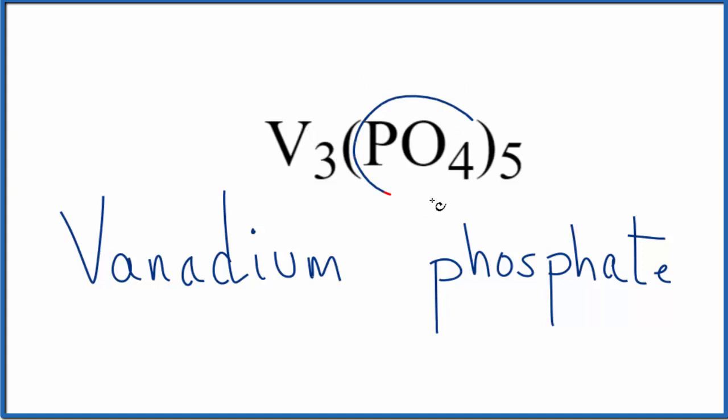Phosphate, the whole thing, the phosphate ion is three minus. So five times three minus, that gives us 15 minus. To get 15 plus over here, three times five plus, that would give us 15 plus.